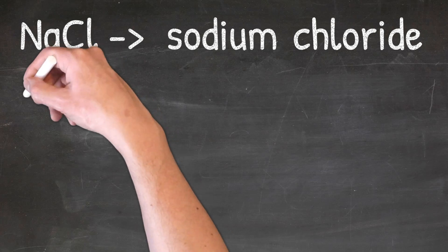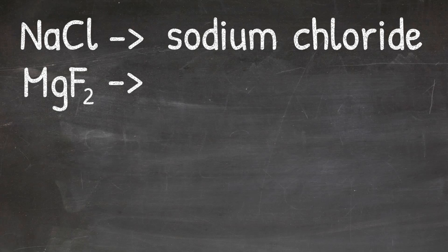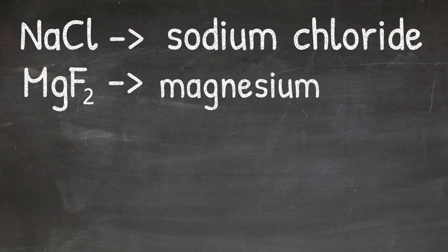In our second example, we'll look at naming MgF2. The first element is magnesium, so I'll write magnesium. And then my second element is fluorine, so I'll change the ending to -ide and get fluoride. So the name of MgF2 would be magnesium fluoride.